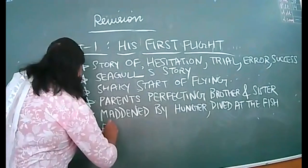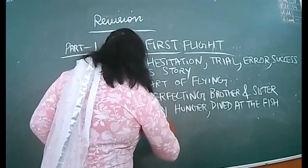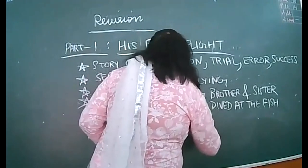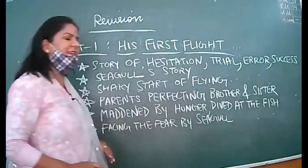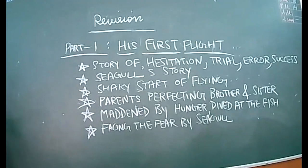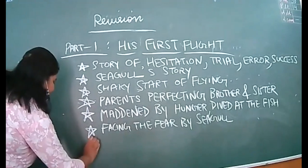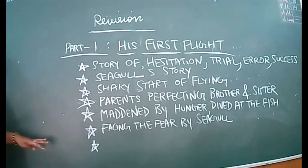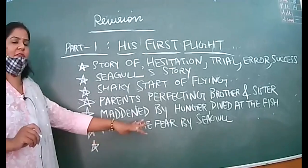This is the first time the seagull faced its fear. It started fluttering its wings — obviously a natural phenomenon of the bird. When it jumps and dives from a height, it will naturally flutter its wings. So facing the fear by the seagull, and finally the first flight was taken.